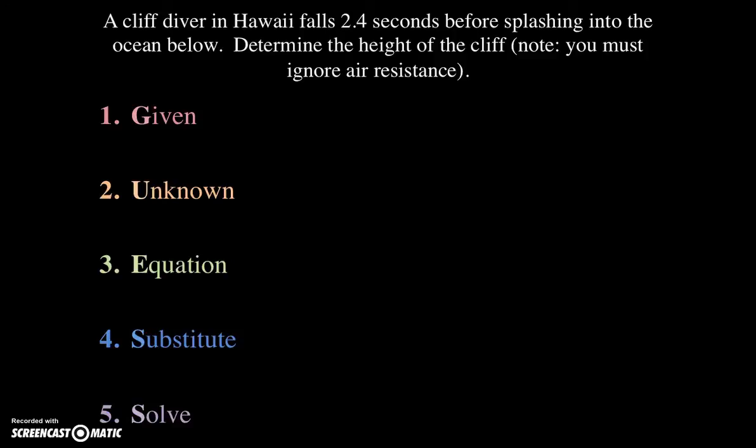So let's lay out our five steps of the guess method. First, what is given to us? Well, there is obviously 2.4 seconds that's given to us. But there's something else that's not so obvious, and it is in the language. We see the word falls, a cliff diver in Hawaii falls. We also see the note at the end that says you must ignore air resistance. These are clues that the cliff diver is experiencing free fall due to Earth's gravity. And so what we need to know is that any object that is in free fall on Earth is accelerating at 9.8 meters per second squared, or 9.8 meters per second per second. So that is the first thing that is actually given to us, and the second thing that's given to us is the time. So we'll lay those out. There's the acceleration. There's the time.